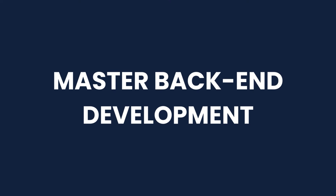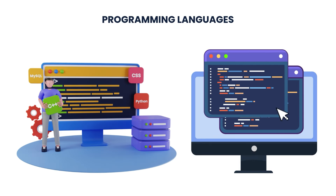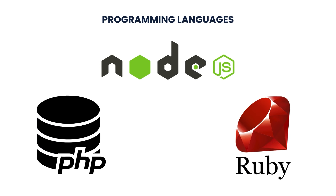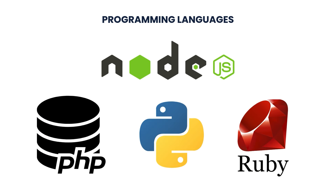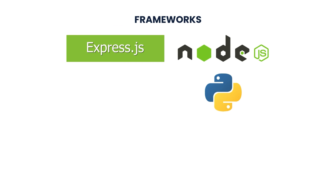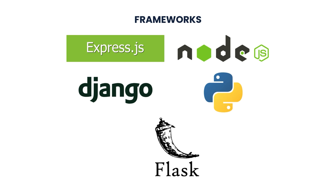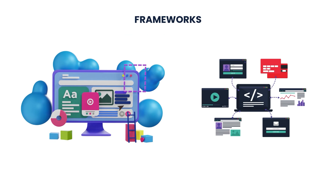Mastering back-end development starts with key programming languages including Node.js, Python, PHP, and Ruby, each offering unique features and capabilities for server-side logic. Frameworks like Express.js for Node.js, Django for Python, and Flask provide tools and structure to simplify web application development and enhance productivity.